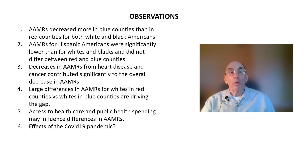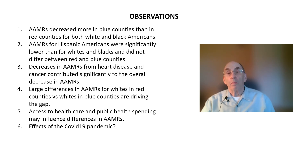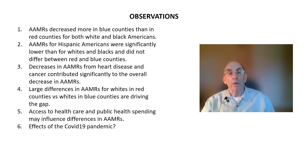To sum up, this study produced several interesting results. First, it showed that age-adjusted mortality rates decreased for all Americans during the 20-year study period, which certainly is good news. It also showed that for White and Black Americans, mortality rates decreased more in blue counties than they did in red counties. The study also showed that age-adjusted mortality rates for Hispanic Americans were significantly lower than for White and Black Americans, and they continued to decrease during the study period. In addition, there was almost no difference between the Hispanic mortality rates in red or blue counties — a finding that deserves more investigation.